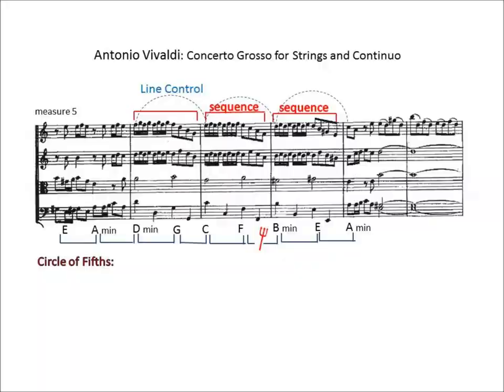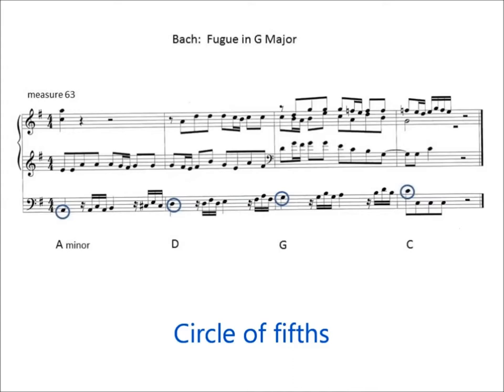In this excerpt, Mr. Trevarthen shows several musical procedures being used simultaneously. The next example of a circle of fifths is joining one procedure — a process, a circle of fifths — with another: line control. So you can have a line control and circle of fifths going on at the same time, and you can also have a sequence going on at the same time.